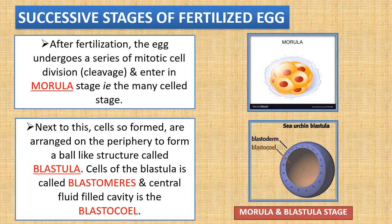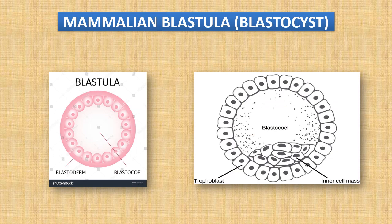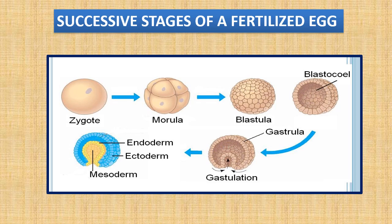In mammals, the blastula is called the blastocyst. It has a fluid-filled blastocoele cavity, a blastoderm layer, and due to rapid mitotic cell division, a group of inner cell masses is formed. To summarize the successive stages of a fertilized egg: after fertilization it is a zygote, then the zygote transforms into a morula, then into a blastula with a blastocoele cavity, then into a gastrula, and at the end of gastrulation we obtain three germ layers — ectoderm, mesoderm, and endoderm.